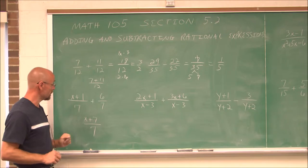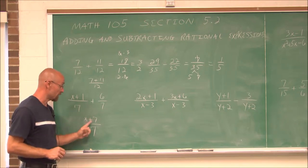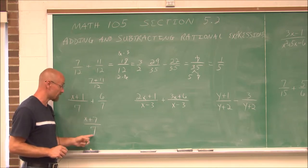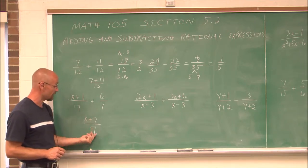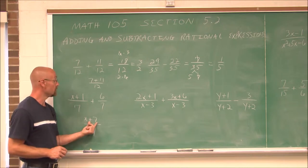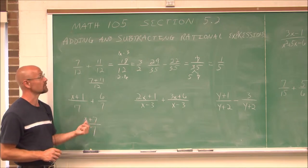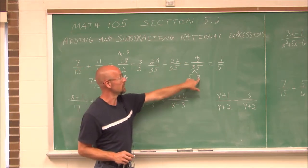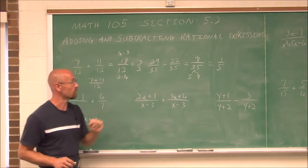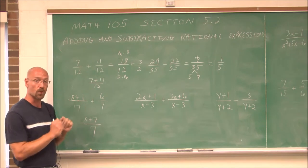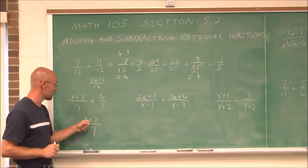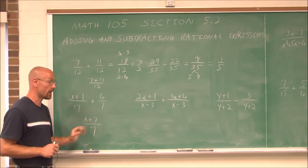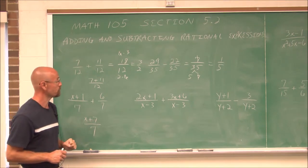One thing to keep in mind: you cannot cancel these 7s. You can only cancel factors, like we did before — those were factors with no sum or difference. Here there's a sum, so we cannot cancel it.